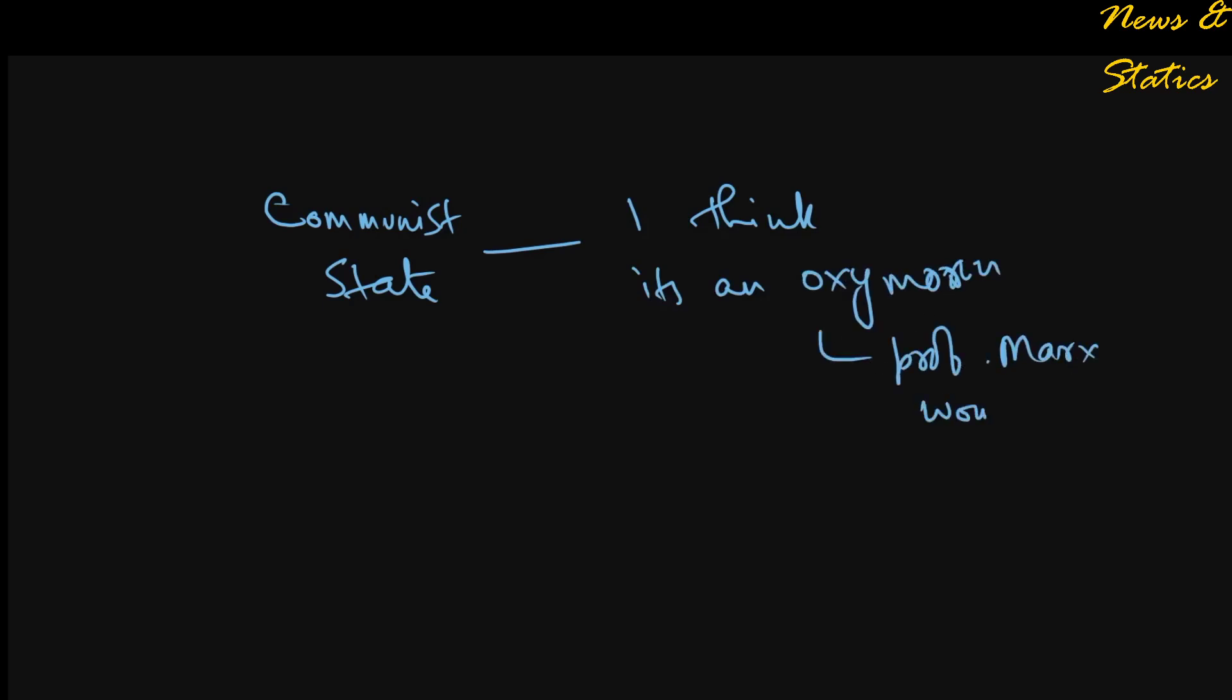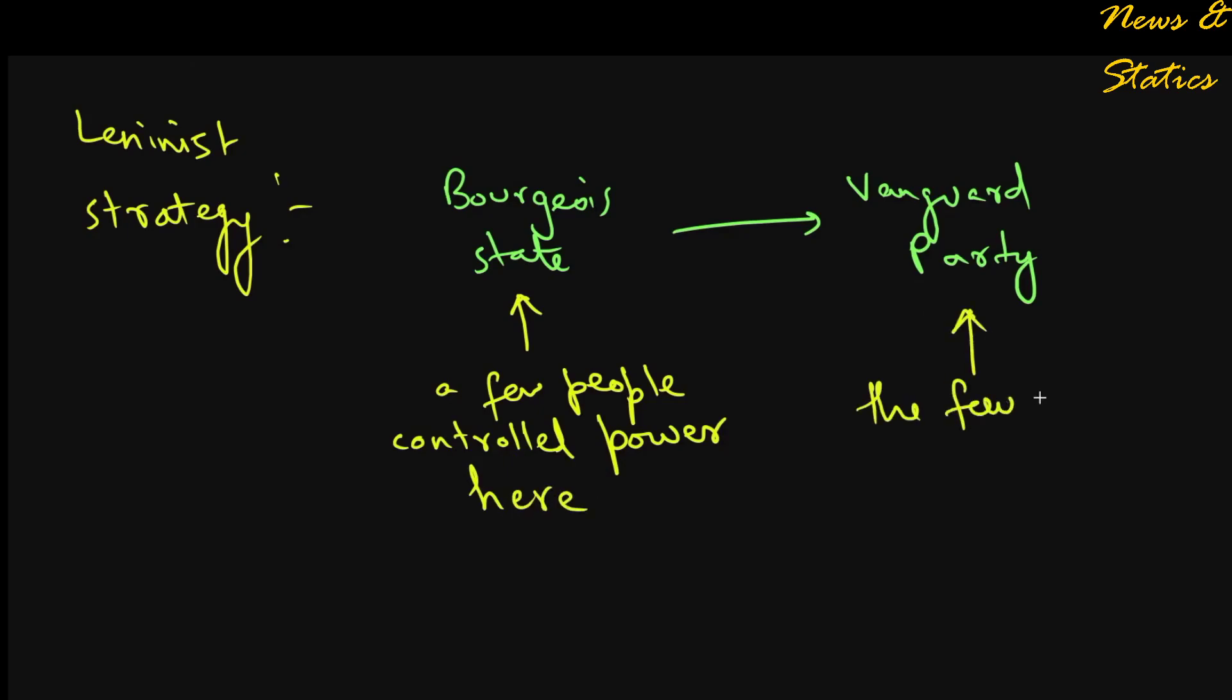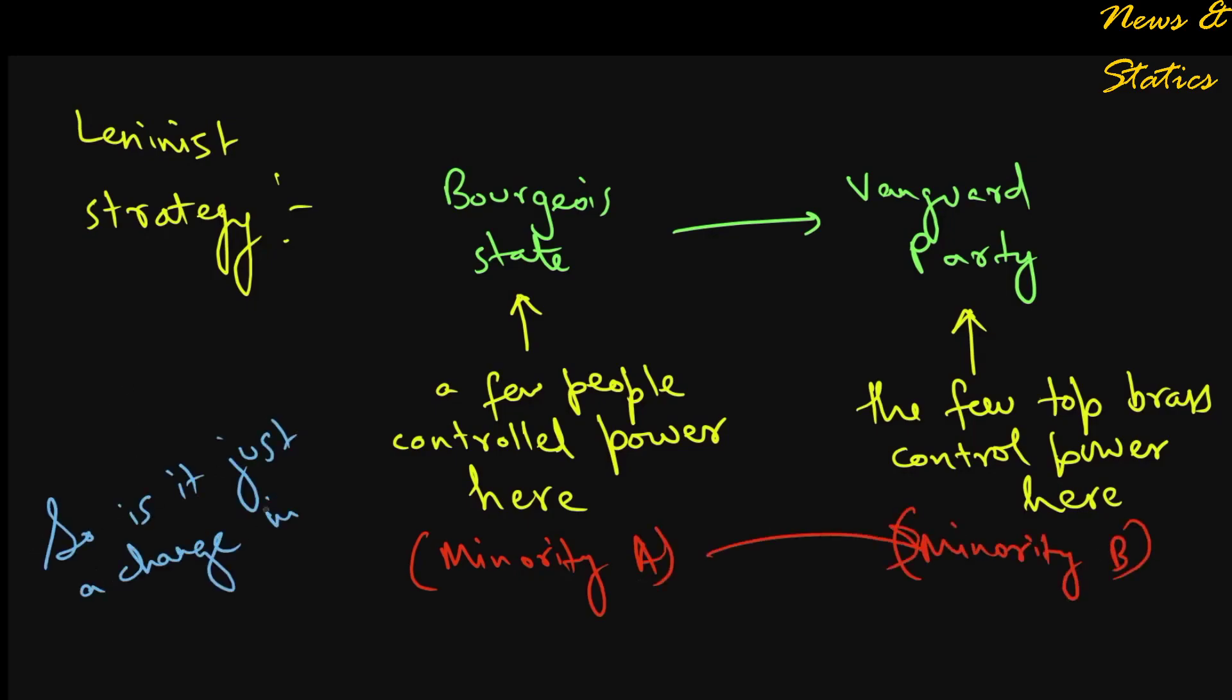Under Leninist strategy, the formation of a communist state involves replacing the bourgeois state with a party whose top brass wields all the power. Thus it is merely the replacement of one minority by another minority. The minority of the bourgeois party is replaced now by the top brass of the communist party, and the democratic labels being a farce.